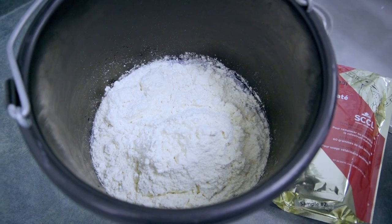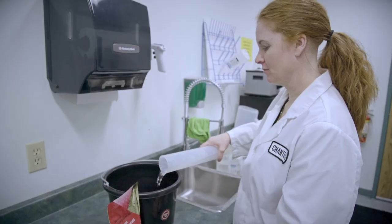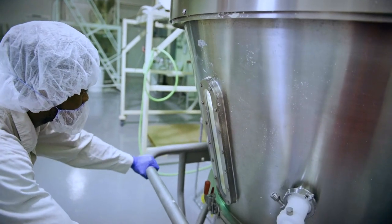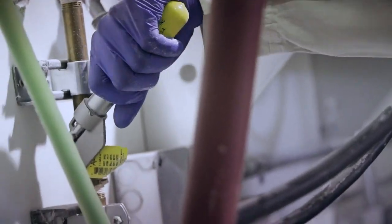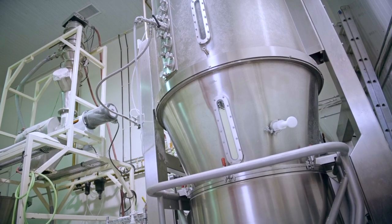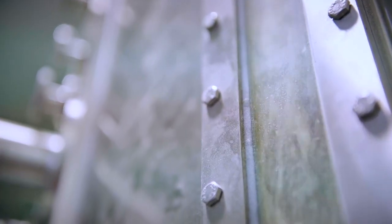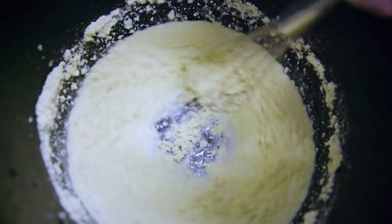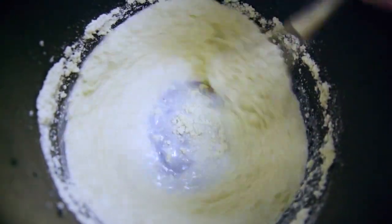Almost all of SCCL's colostrum is now agglomerated, which makes it very easy for the end user to mix with water. The agglomeration process takes the powdered colostrum, which is the consistency of flour, and through air and atomized water stacks the individual colostrum particles in such a way that increases its surface area and allows the powder to be more hydroscopic and dissolve quickly.